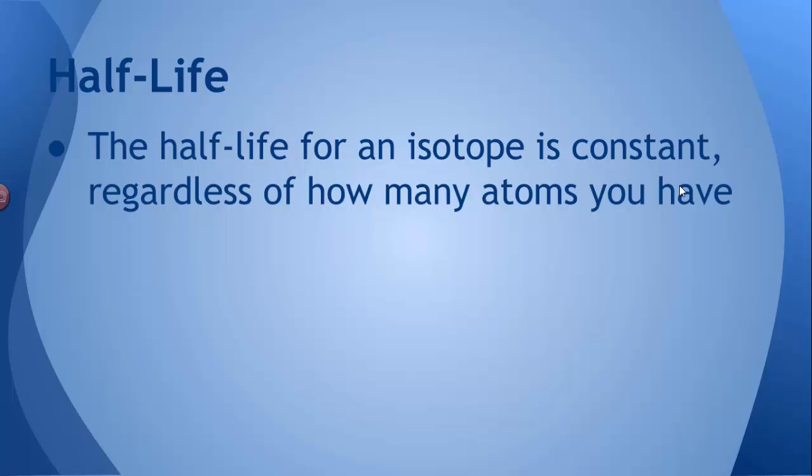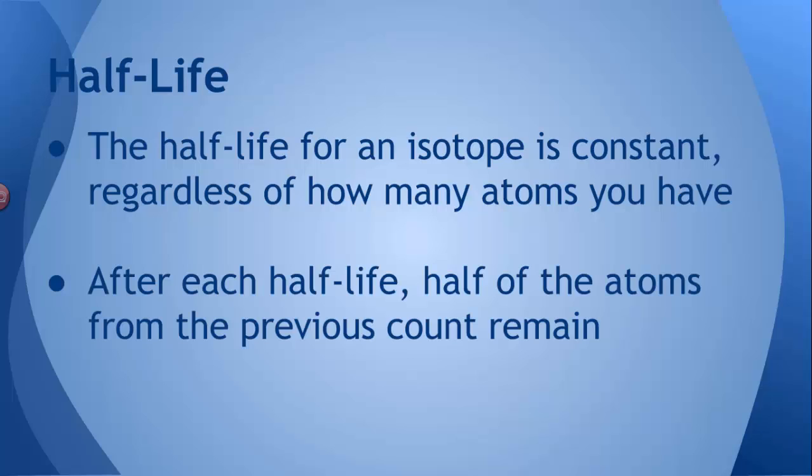The thing about half-life is that it doesn't matter how many atoms you have, it'll always take the same amount of time for half of those atoms to decay. That's kind of weird. You mean if I have 100 atoms, it'll take a certain amount of time to get down to 50. But if I have a billion atoms, it'll take the same amount of time to get down to half a billion? That seems weird. Well, that's the way it works. The more atoms of a radioisotope you have, the faster they decay. So if they're going faster, it's going to take the same amount of time to get down to half of them.